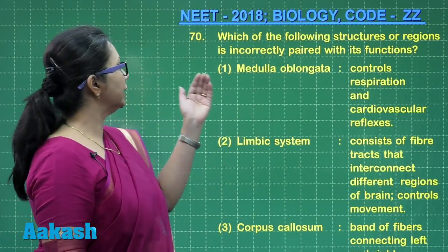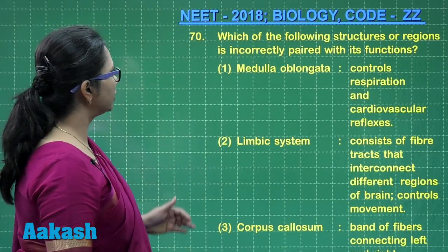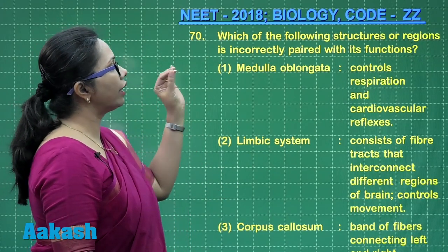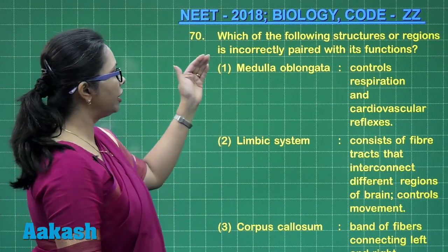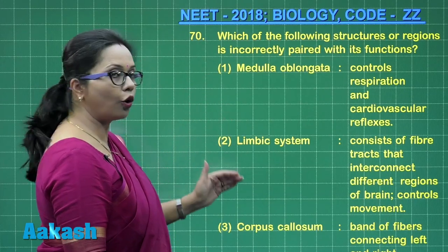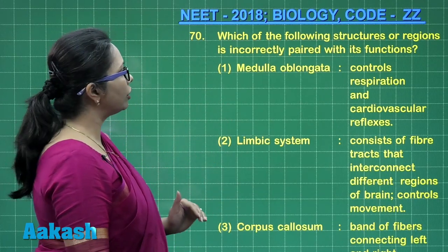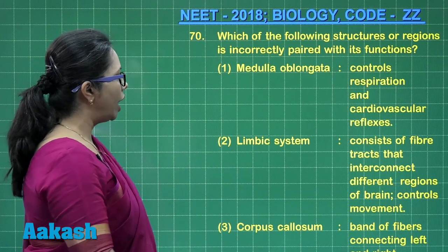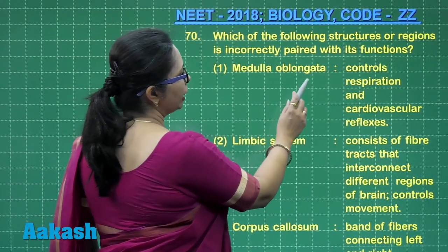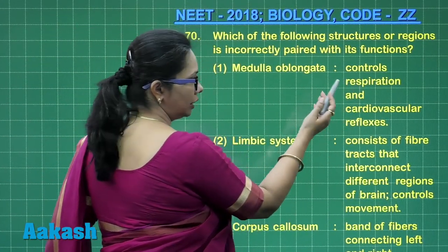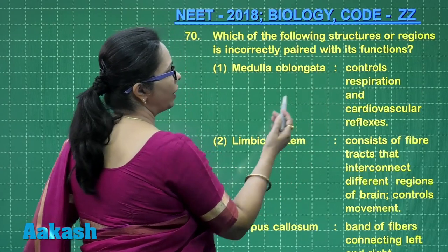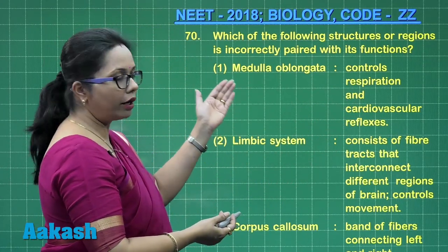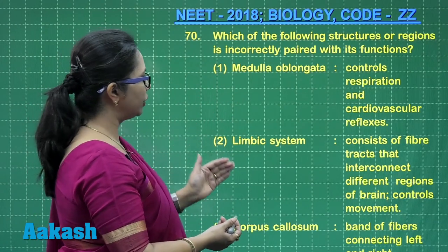Let us take question number 17: which of the following structures or regions is incorrectly paired? Here we are given the structures of the central nervous system and we have to choose the incorrect pair. The first option — medulla oblongata controls respiration and cardiovascular reflexes — is right. These involuntary reflexes are the function of the medulla oblongata.